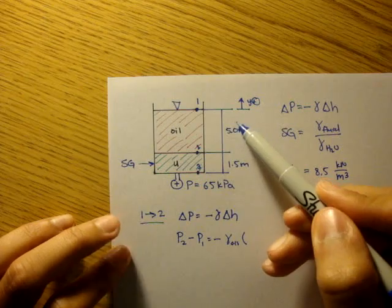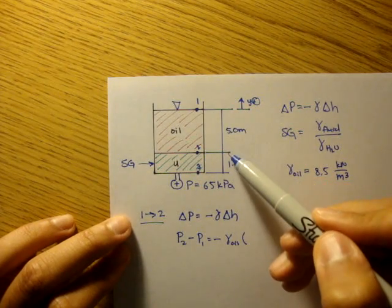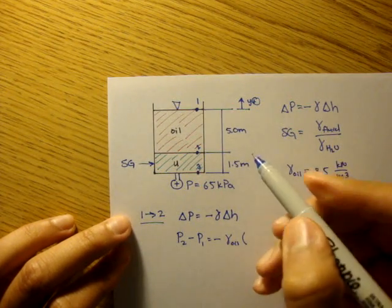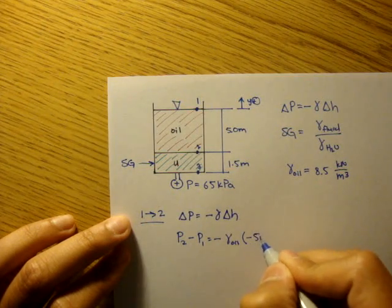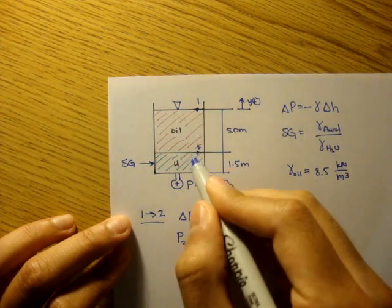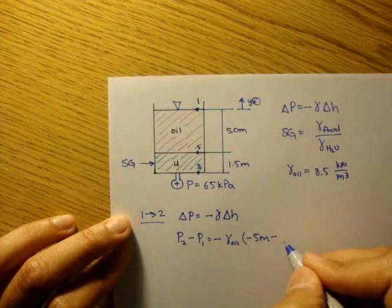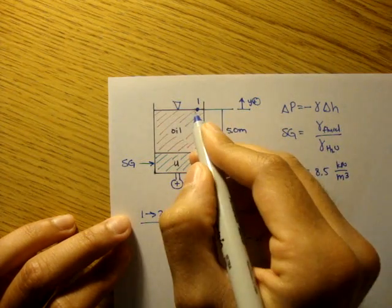Our change in height would be negative five meters minus zero meters. Pressure one is equal to zero, right? The pressure here is zero. One is at zero.